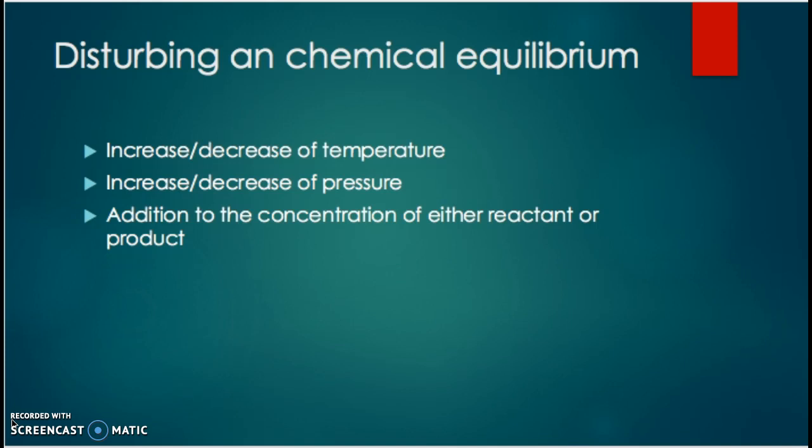When iron thiocyanate is formed, the solution would turn red — the darker the red, the higher the concentration. When the reactants were being formed, the solution would turn orange, as the concentration of the products was being reduced, so the solution would also be lighter.